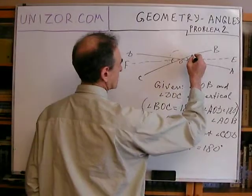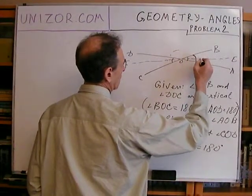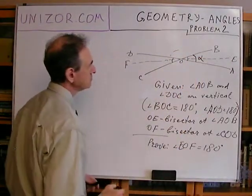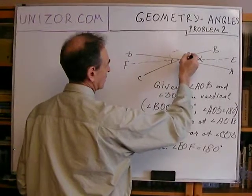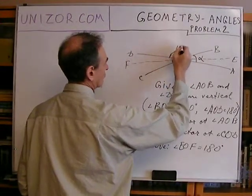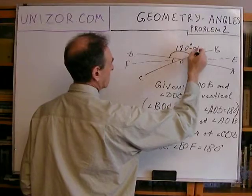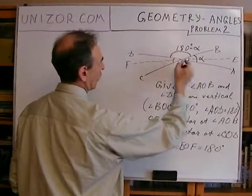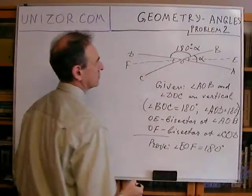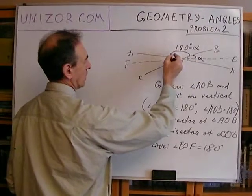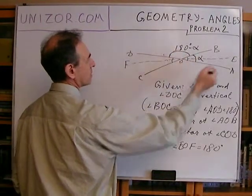Consider this angle is equal to alpha. Then this will be 180 degrees minus alpha since AOD is a straight line. So, alpha and 180 minus alpha, they're supplementary to each other.